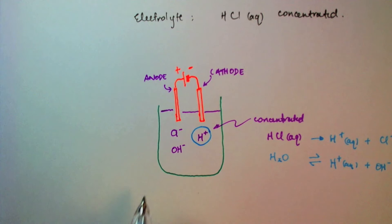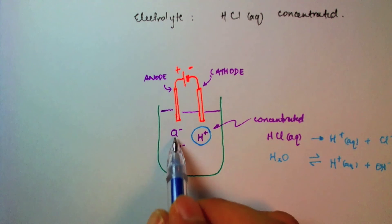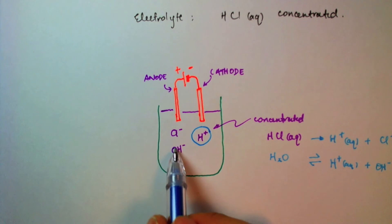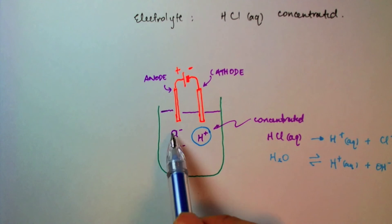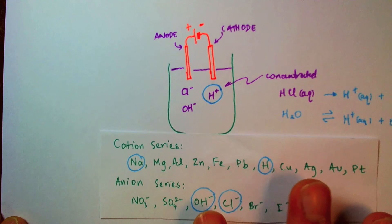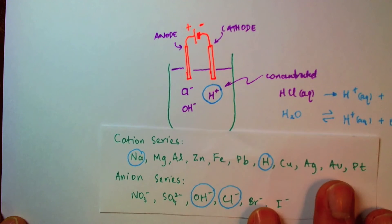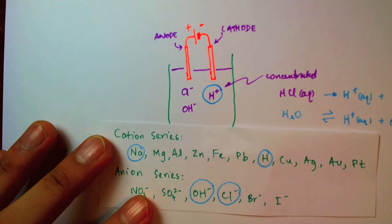And to determine which of these will be discharged, because remember, only one of these species can be discharged. That's the rules of the game. We can't have both of them giving up electrons and being discharged at the anode.